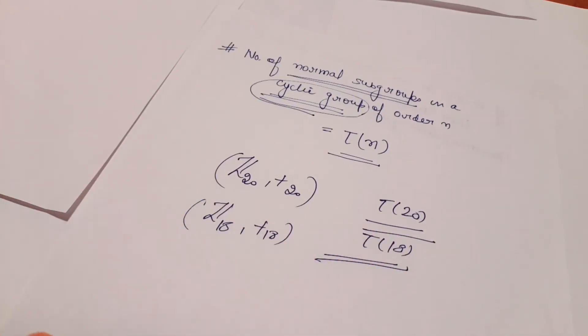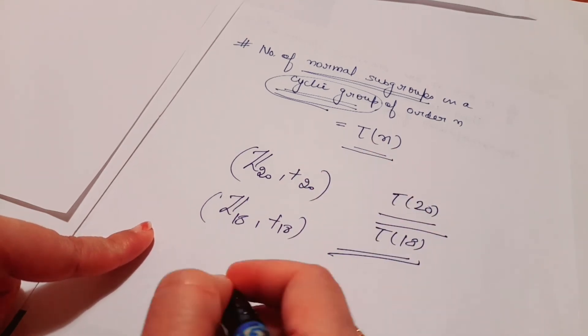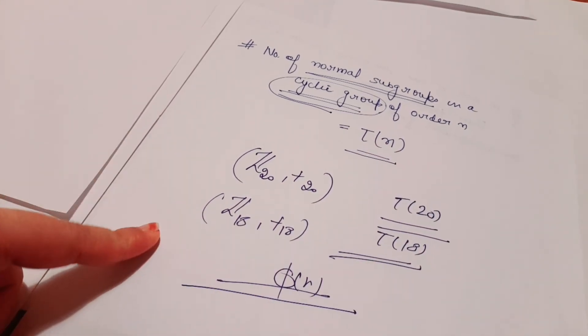We have two videos for short tricks of modern algebra for MCQs. I hope you got this - what is tau n, what is sigma n, why do we use these functions, what is phi n. Everything I am discussing nowadays.